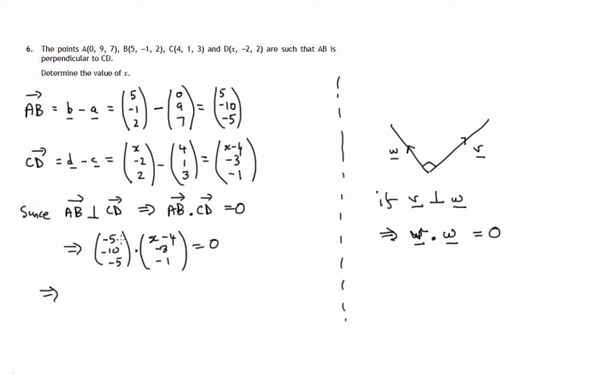Now, dot product you know you can get from multiplying corresponding components and then adding the results. Sorry, that's a positive 5. So, off we go then. 5 times X minus 4 plus negative 10 times negative 3 plus negative 5 times negative 1.